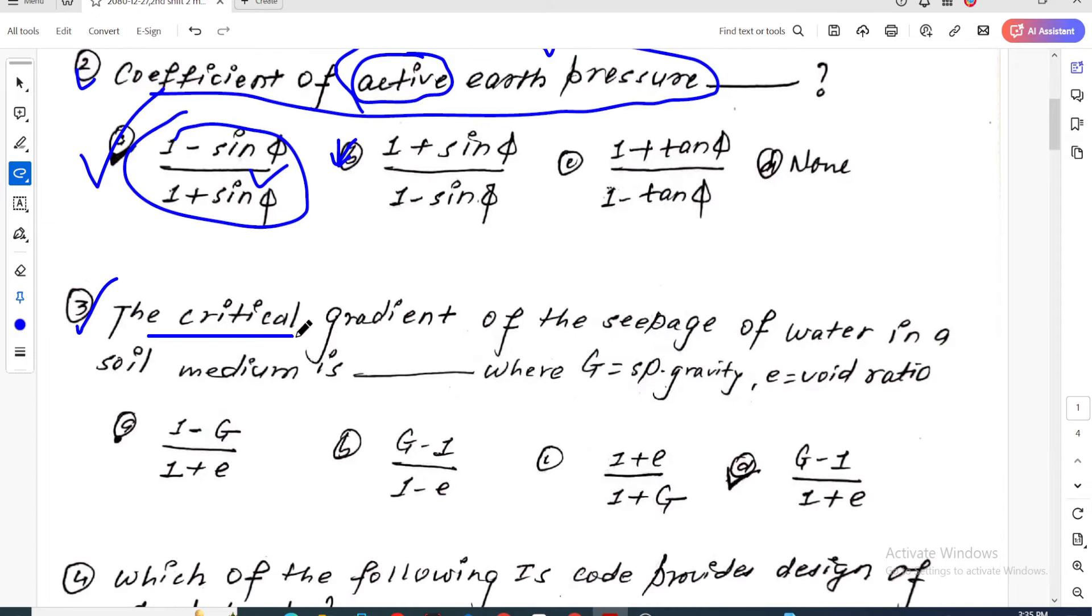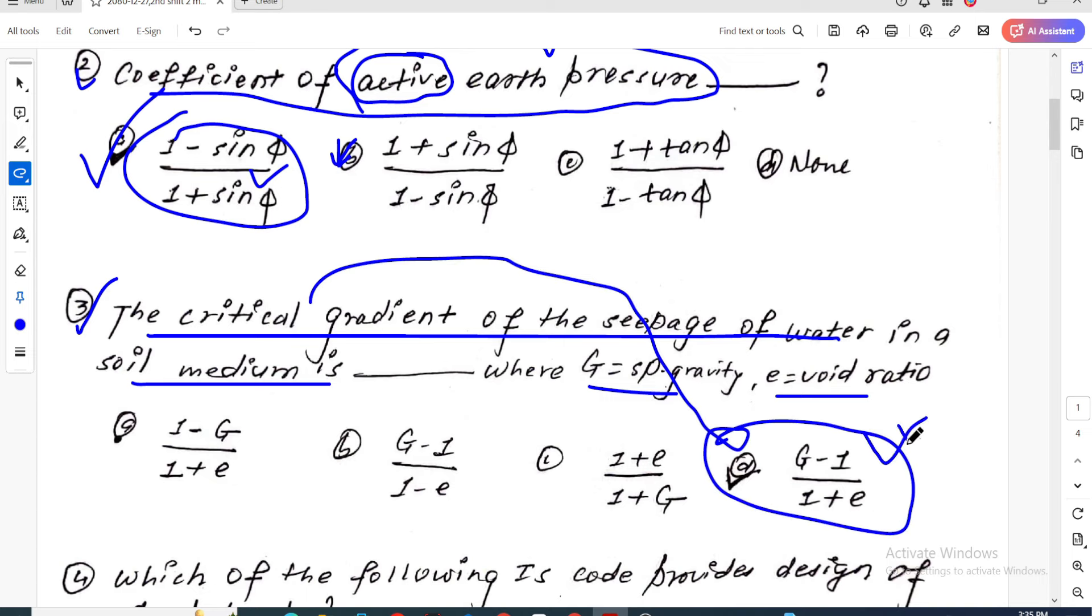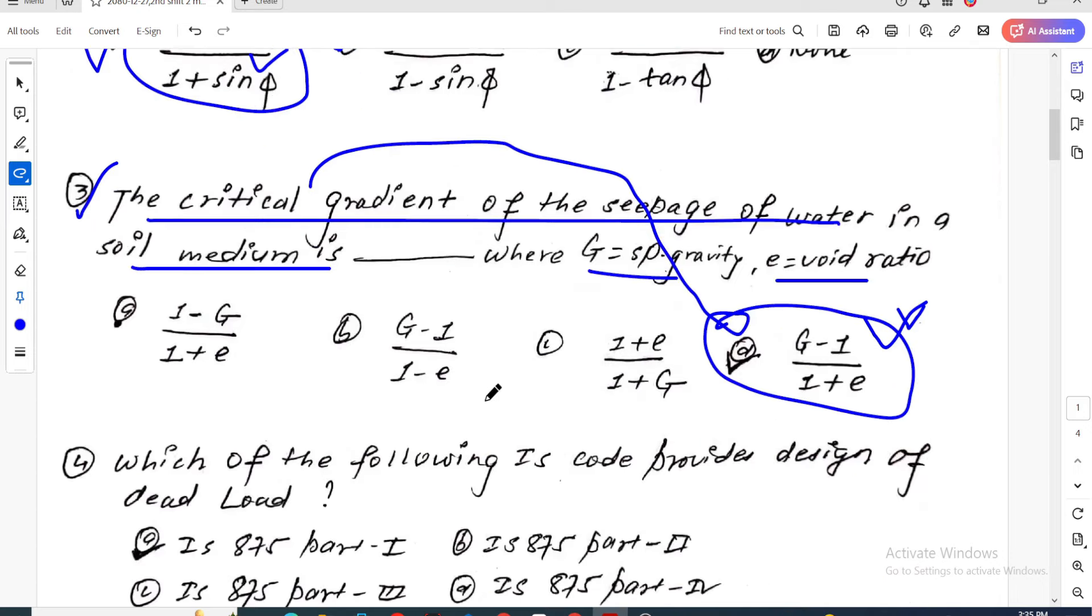Question three: The critical hydraulic gradient for seepage of water in a soil medium is G minus 1 divided by 1 plus E. This appeared in multiple exams: 2018, and other years.